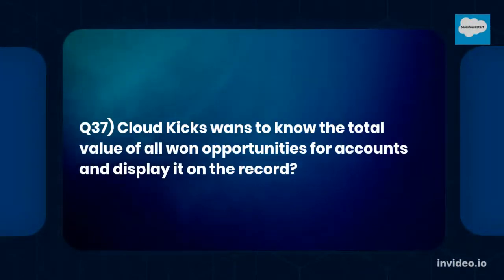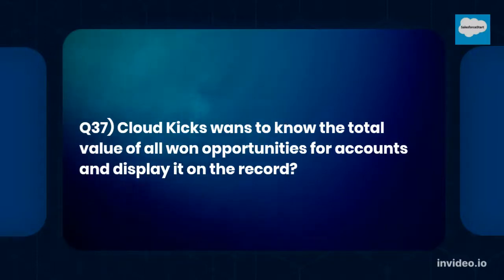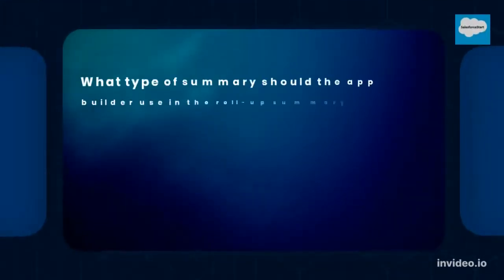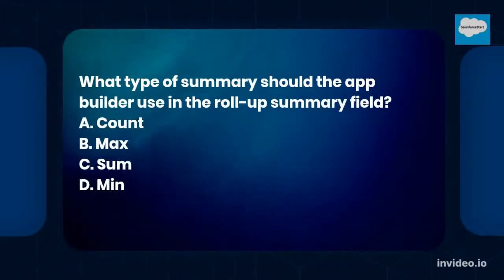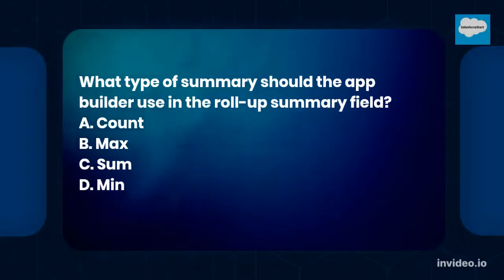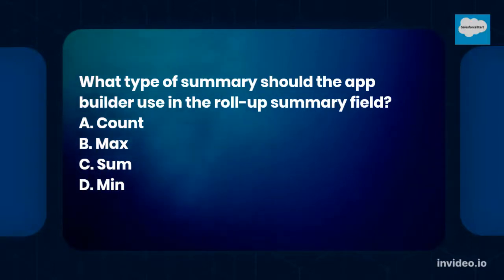Question number 37. CloudKix wants to know the total value of all won opportunities for accounts and display it on the record. What type of summary should the app builder use in the roll-up summary field? A. Count. B. Max. C. Sum. D. Min.